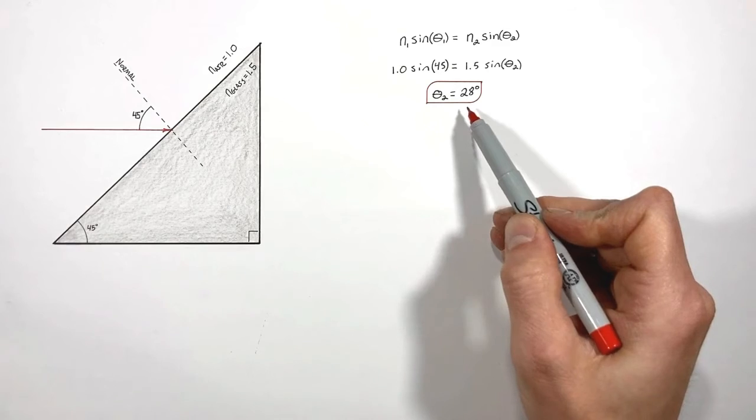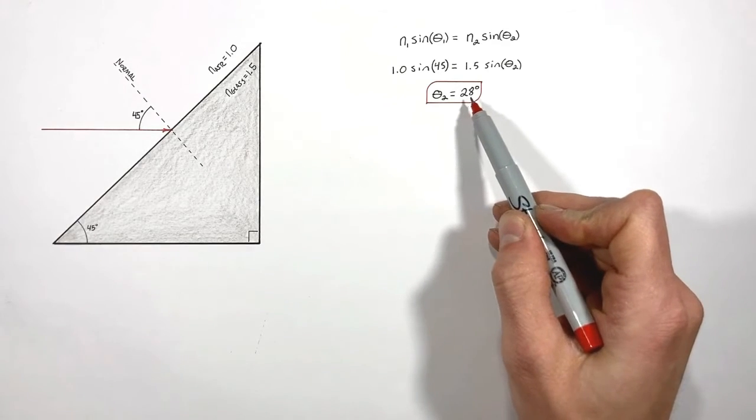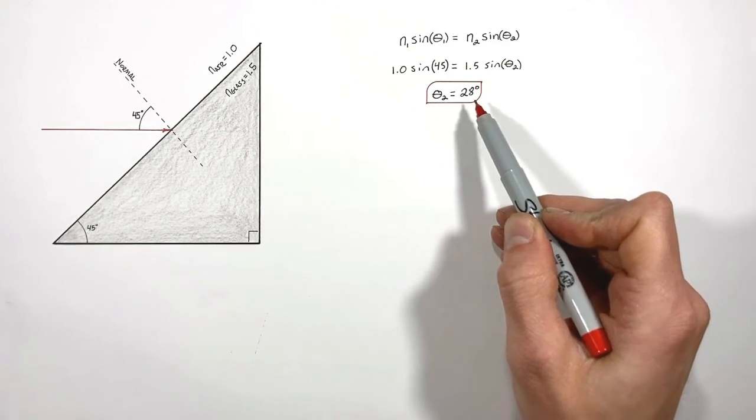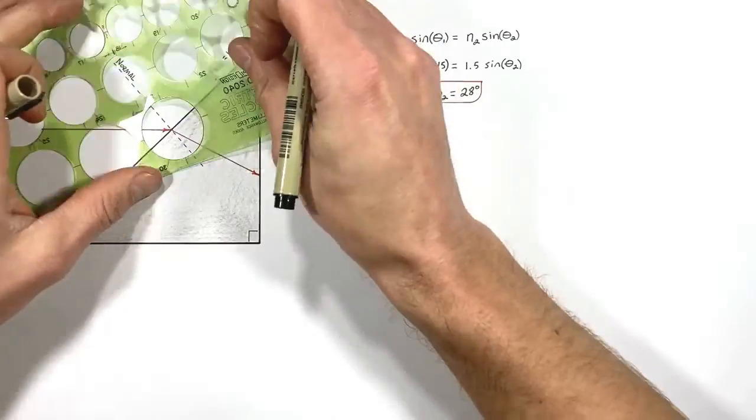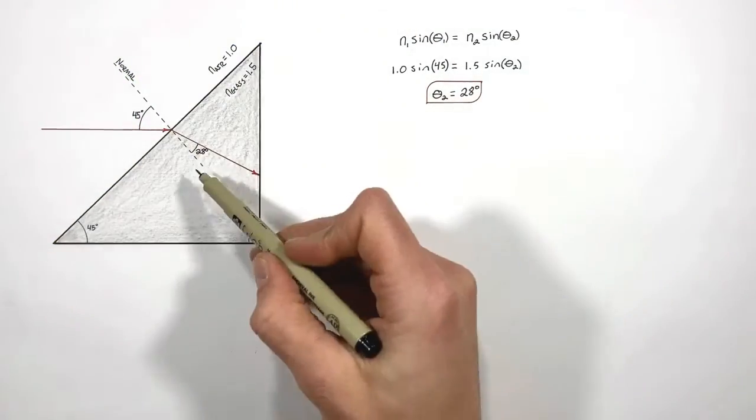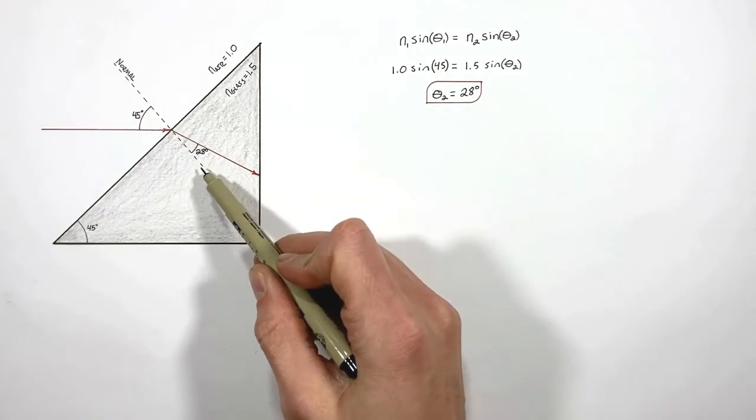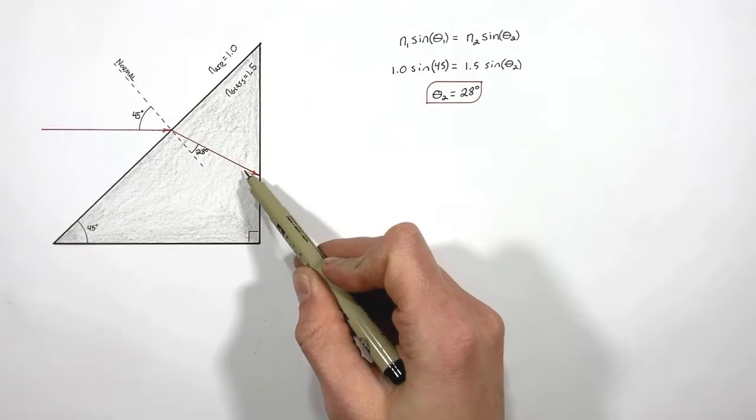And we find the light ray once it's passed into the glass is headed 28 degrees relative to the normal, like this. Where 28 degrees is the angle between the normal vector and the refracted ray.